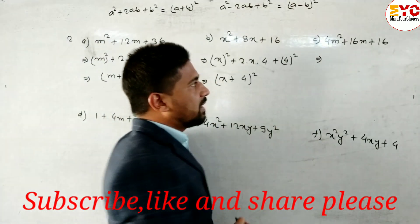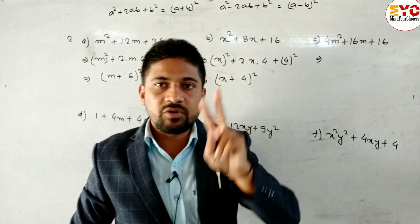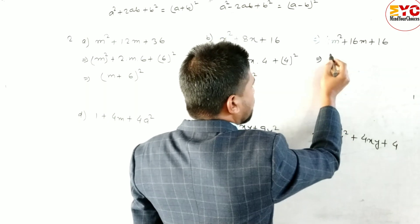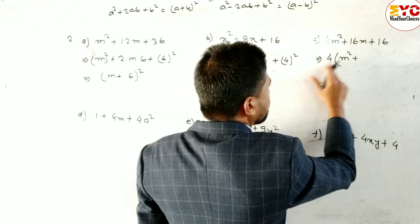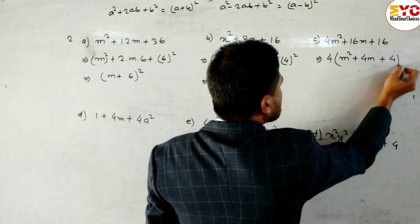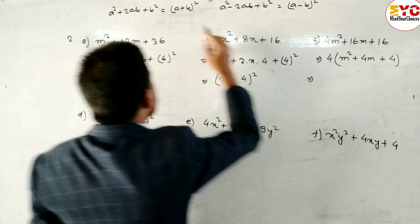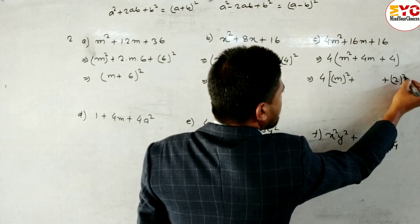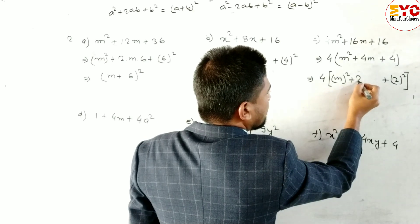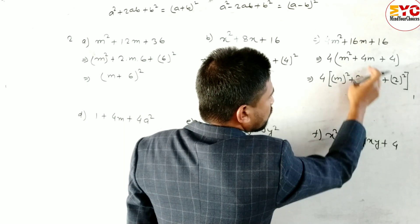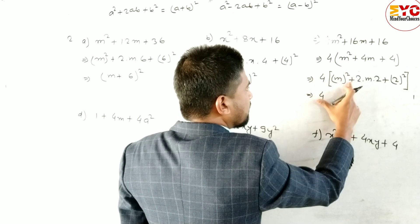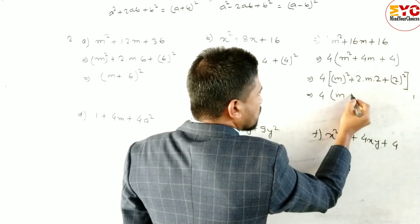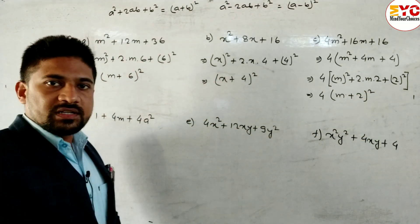For Question 2c, we first need to take a common factor before converting to formula. We can take 4 as common, giving 4(m² + 4m + 4). Now convert: m² = (m)², and 4 = (2)² since 2² = 4. The middle term 2ab = 2·m·2 = 4m. This is in the form a² + 2ab + b², so it equals 4(m + 2)².